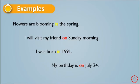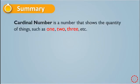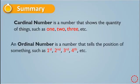In summary, a cardinal number is a number that shows the quantity of something, such as one, two, three, one hundred, two hundred, eleven, thirteen, twenty—any number. An ordinal number is the number that shows the position of something, such as first, second, third, fourth, et cetera.